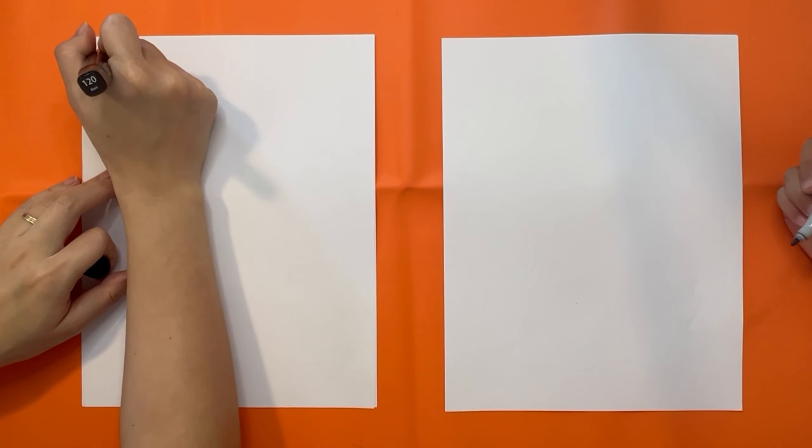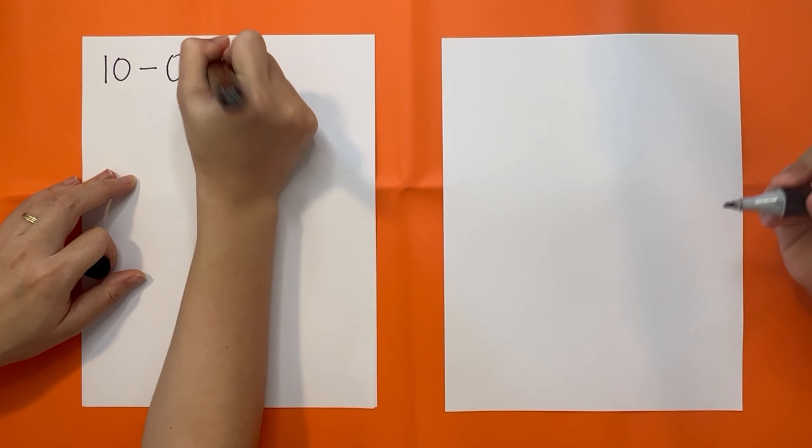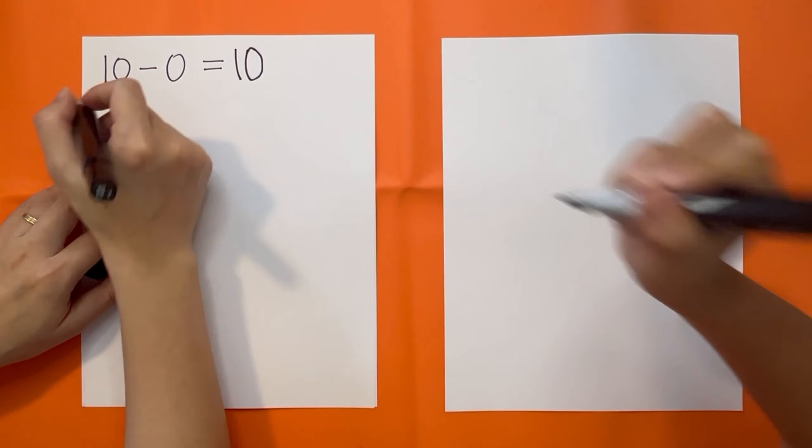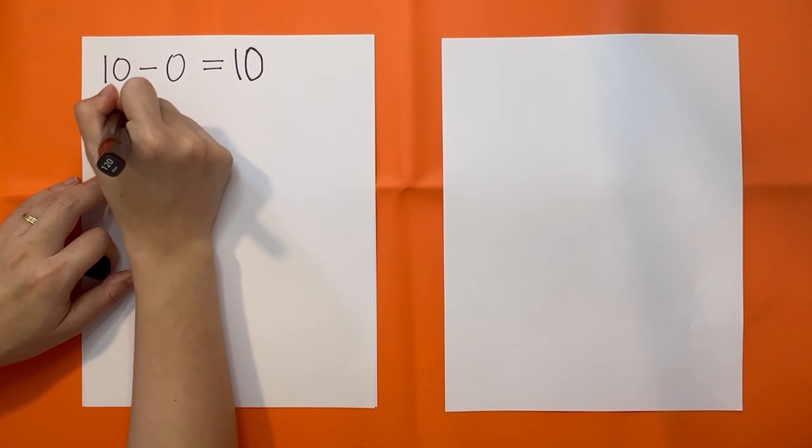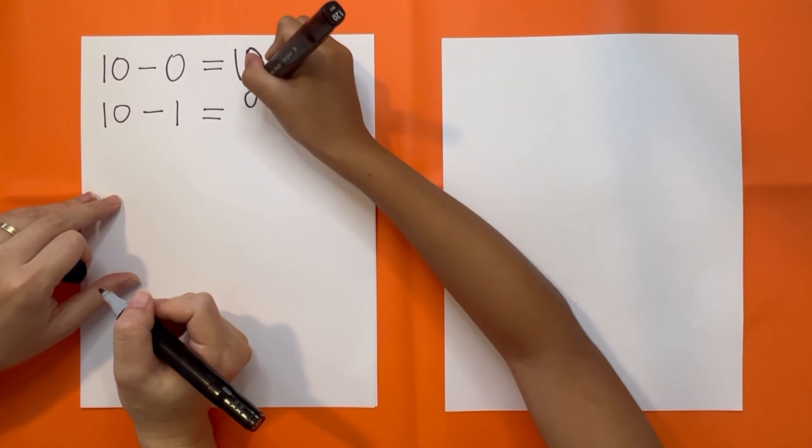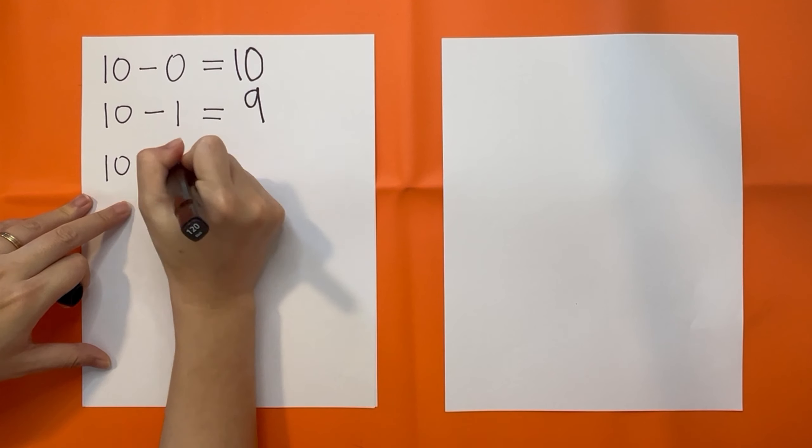Okay. 10 minus 0 equals 10. 10 minus 1 equals 9. 10 minus 2 equals 8.